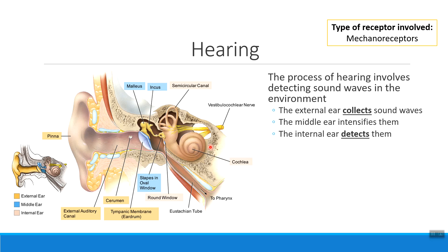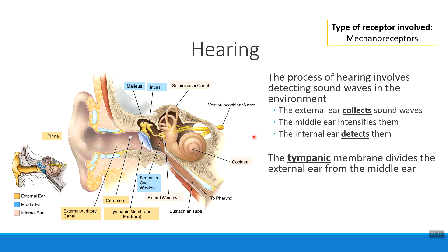Not only do we need to know which structures are found in which part of the ear, we also need to know what the dividing lines are between the external ear and the middle ear, and the middle ear and the internal ear. The first dividing line to be familiar with is the tympanic membrane, which literally is a drum-like membrane, and is what divides the external ear from the middle ear. When someone says they've burst their eardrum, what they're talking about is this dividing line membrane right here, the tympanic membrane.